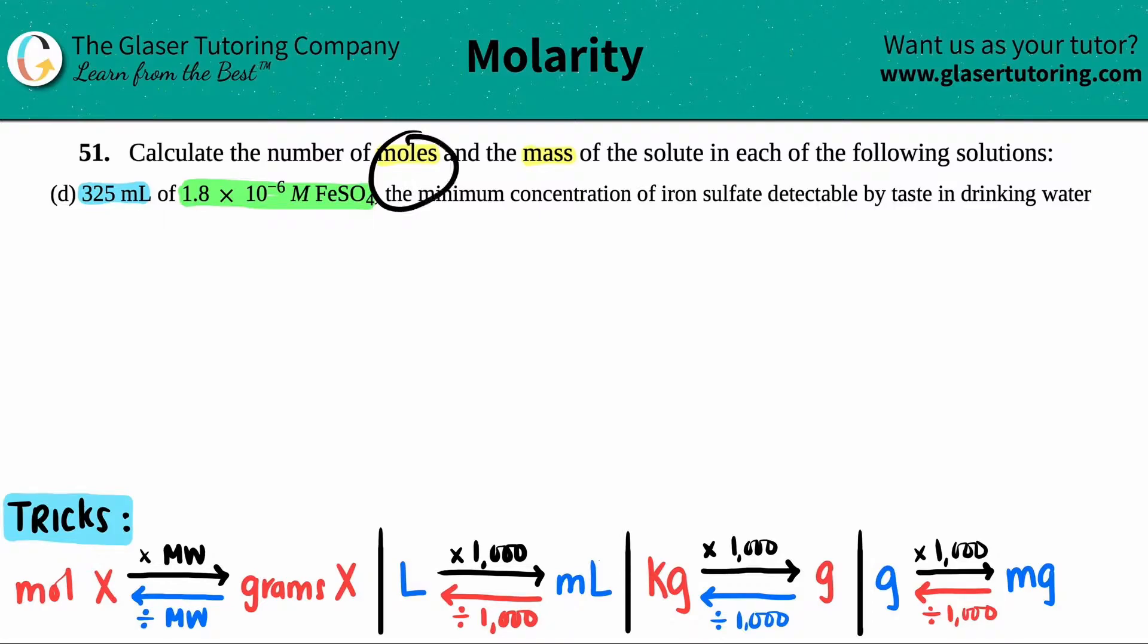We want to find out the moles and the mass. They gave us a volume - milliliters is a volume - and they gave us a molarity. Capital M is a molarity. So there's a relationship between a volume, a molarity, and moles, and I wrote it in a nice little triangle right here.